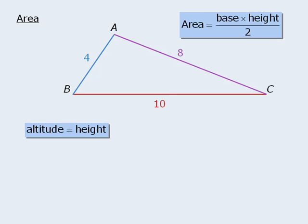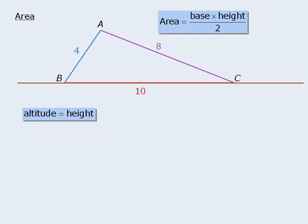Now let's find the area of the hypothetical triangle shown here. First we must decide which side will be the base. Let's choose side BC to be the base, and we'll show that this is the base by adding an imaginary ground. So if side BC is the base, we already know that the length of the triangle's base is 10. The height of a triangle is the distance from the vertex opposite the base, down to the base such that this line is perpendicular to the base. Let's say that the height of this triangle is 3. The area will be equal to the base, which is 10, times the height, which is 3, divided by 2. This evaluates to 15, so the area of this triangle is 15 square units.